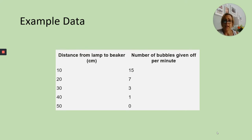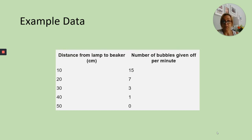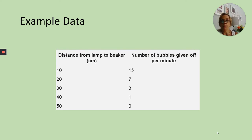Here is some example data — on the previous page there was also a link to an online practical where you can generate your own results should you wish. The data shows the distance from the lamp to the beaker measured in centimetres, and the number of bubbles given off per minute. We assume all bubbles are the same size and volume — that may not always be the case, but it's an acceptable assumption for this practical. If you haven't generated your own data, jot this down in the table in your book.